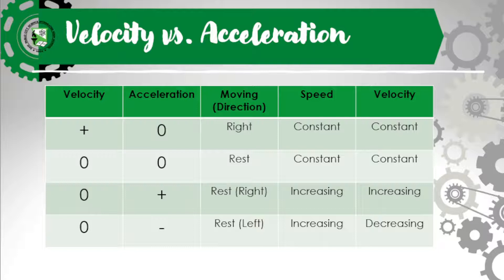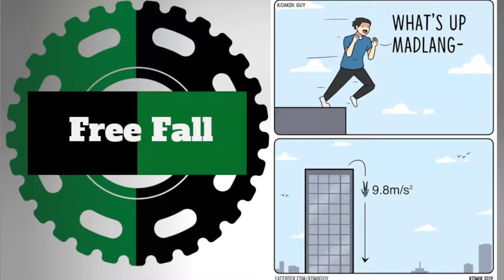So, how can we describe a body in motion moving uniformly on the positive or negative y-axis? We have free fall. Based from this meme — what's up — let's go to free fall.